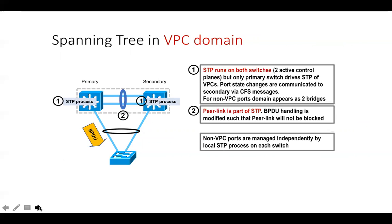You may wonder why we need STP if we already have a loop avoidance mechanism in VPC. STP runs in the background and helps in cases where VPC is misbehaving, when VPC is initially coming up, or when VPC is not working at all. In those cases, loops will be avoided by STP.